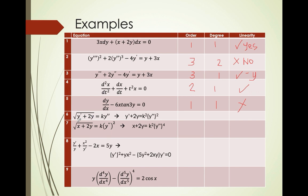Originally this is a square root, so you square both sides and you get the following: this is 2nd order, 2nd degree, and of course not linear.